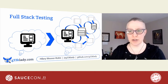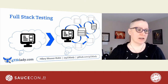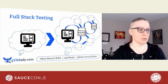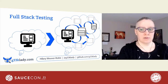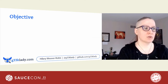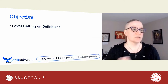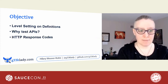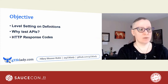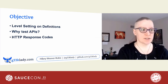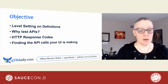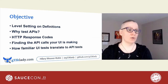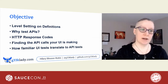I suddenly was the go-to person for how my application worked — not any of the developers somehow. Everything just kind of fell into place. So today, first I want to level set on some definitions around APIs. Then we'll talk about why test them. Some HTTP response codes and how they fit into our testing. We'll find the API calls that our UI is making. And then see how some UI tests translate to API tests.